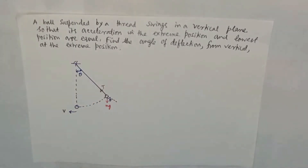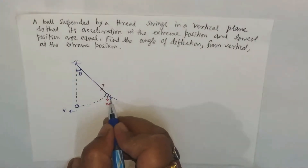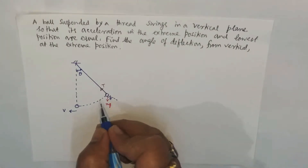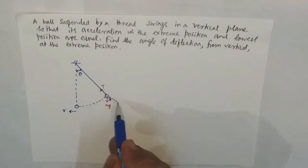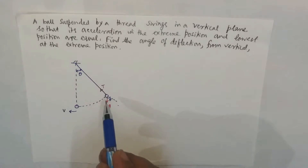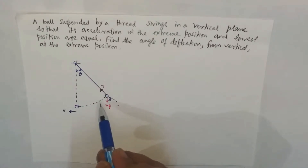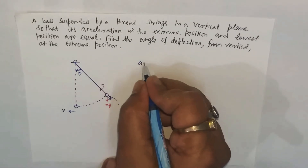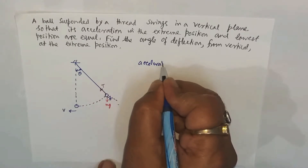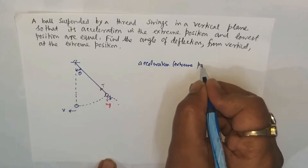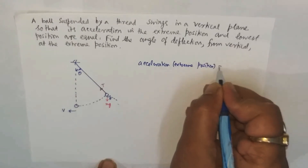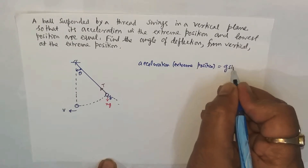The angle of deflection from the vertical at the extreme position is theta. Resolving mg into two components: mg cos theta and mg sin theta. The mg cos theta is counterbalanced by the tension, so the net unbalanced force is mg sin theta. Hence the acceleration at the extreme position is equal to g sin theta.